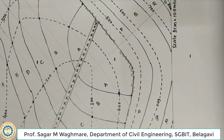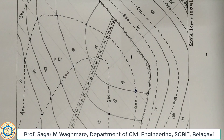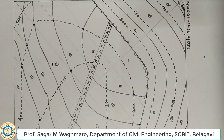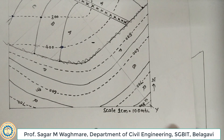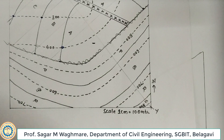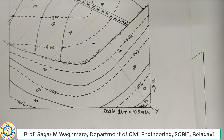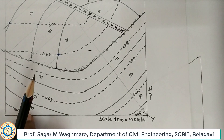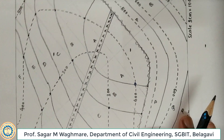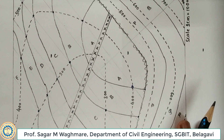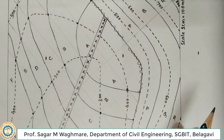Hello students. Now we will see a next map where we will discuss about different geological features. As I already explained, you should hold the map in such a way that the north direction should be always away from you and the scale should be towards you. But just because of the space constraint, I will be holding the map in this fashion so that I can explain things much better.